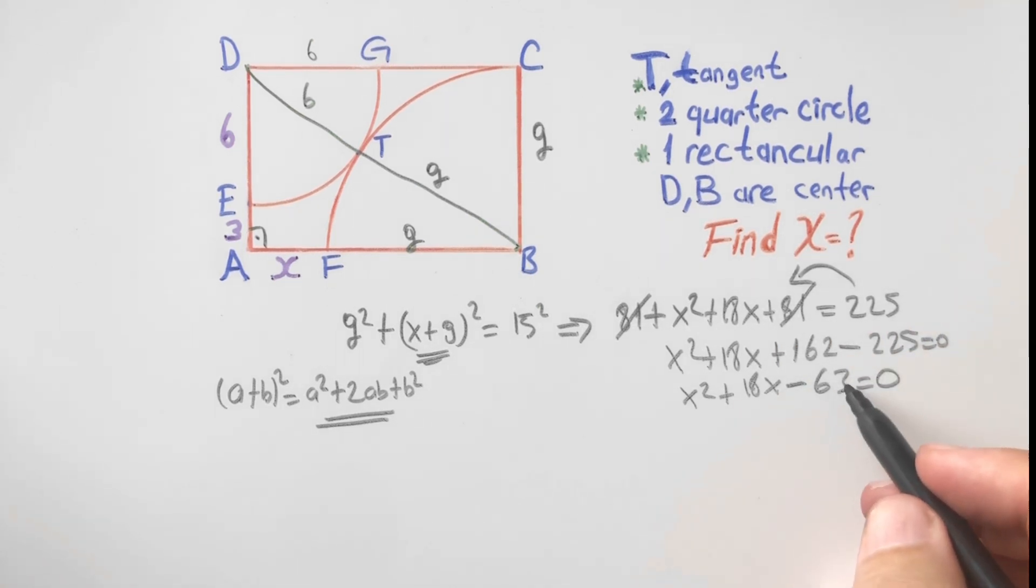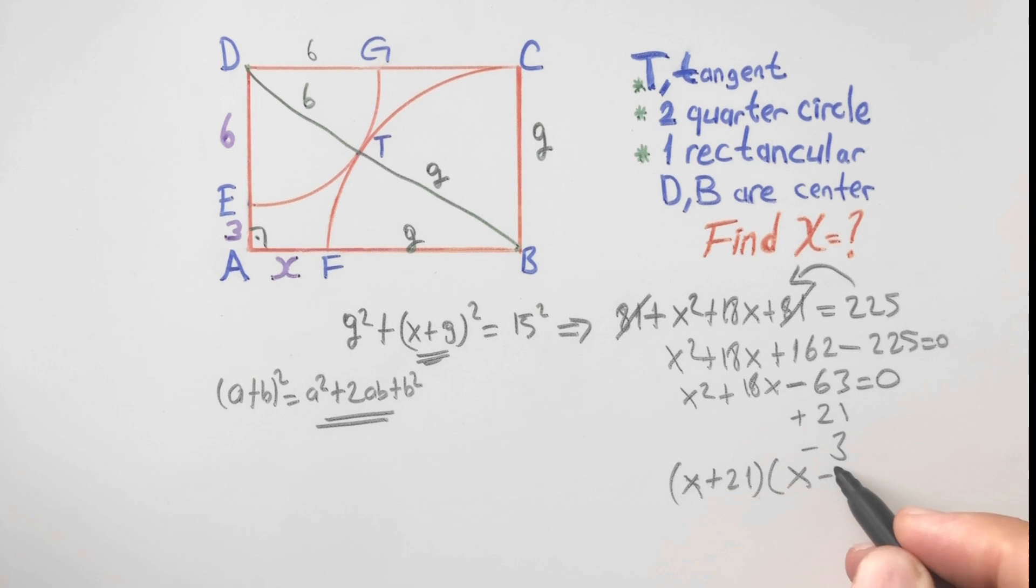If you separate 63 with 21 and 3, this equation equals x plus 21 times x minus 3.